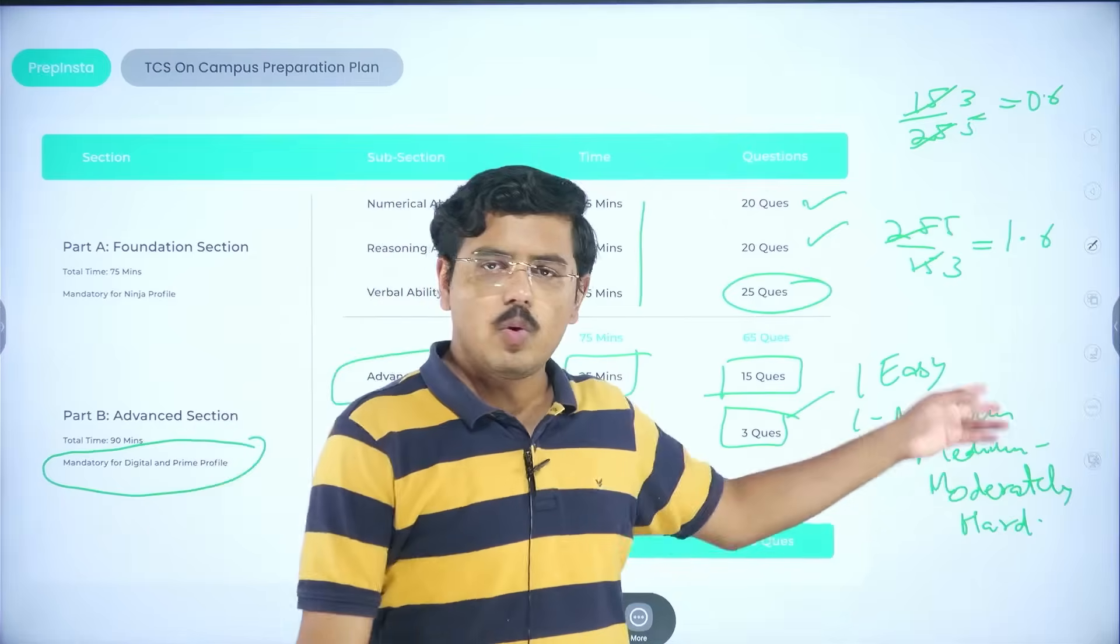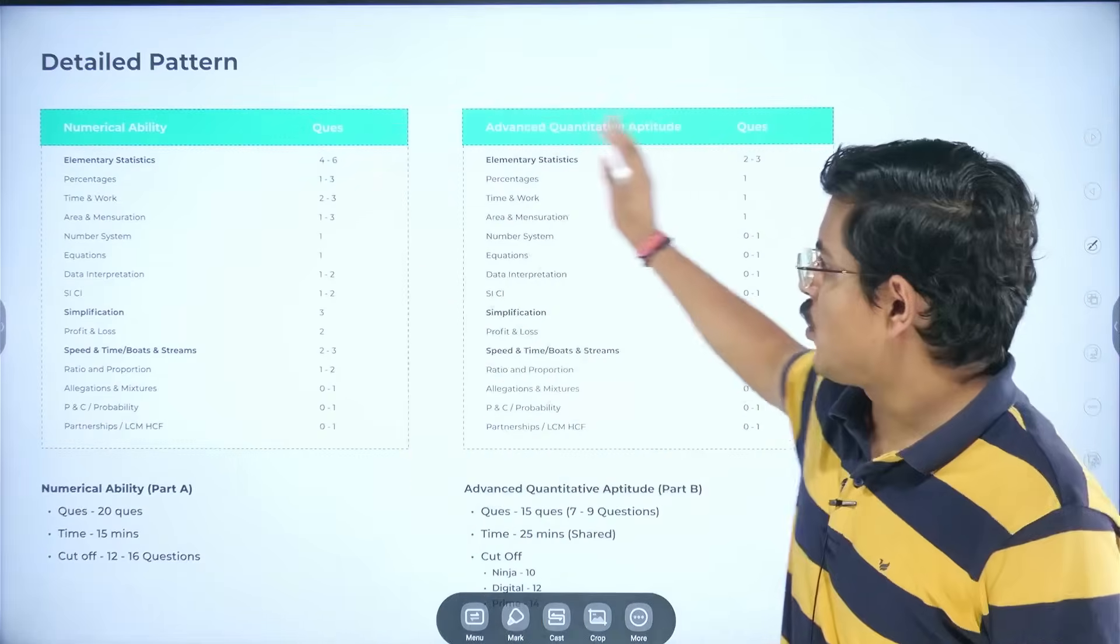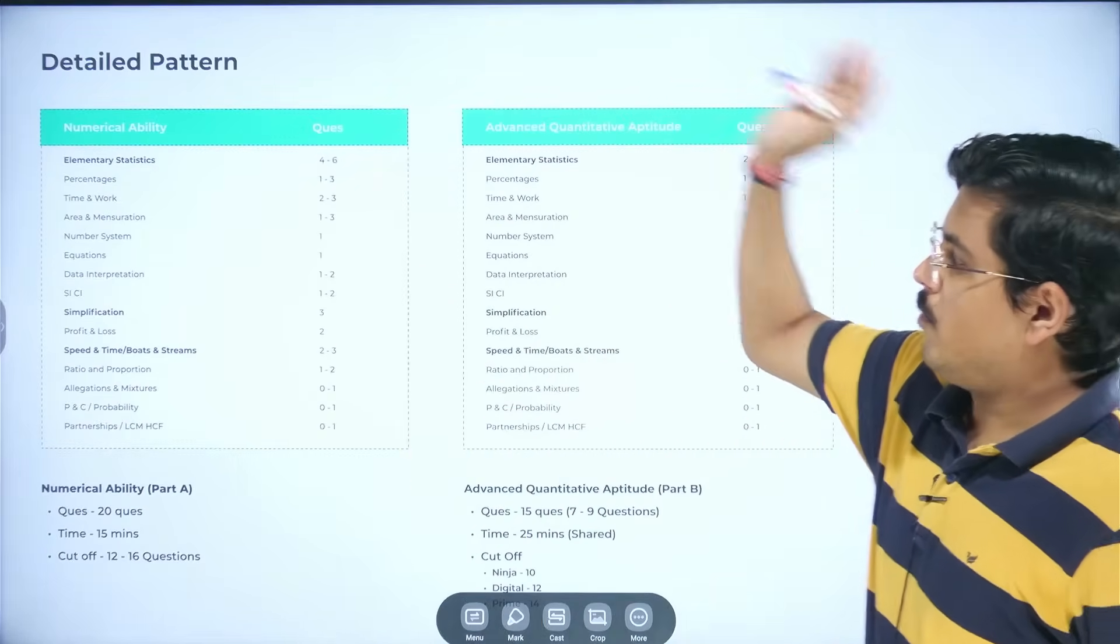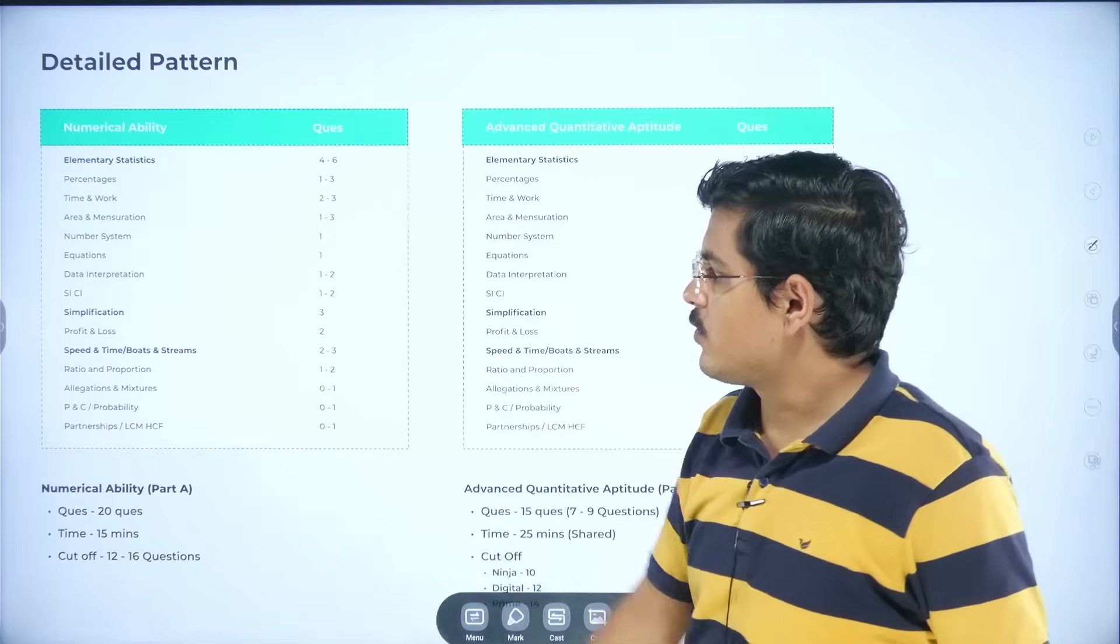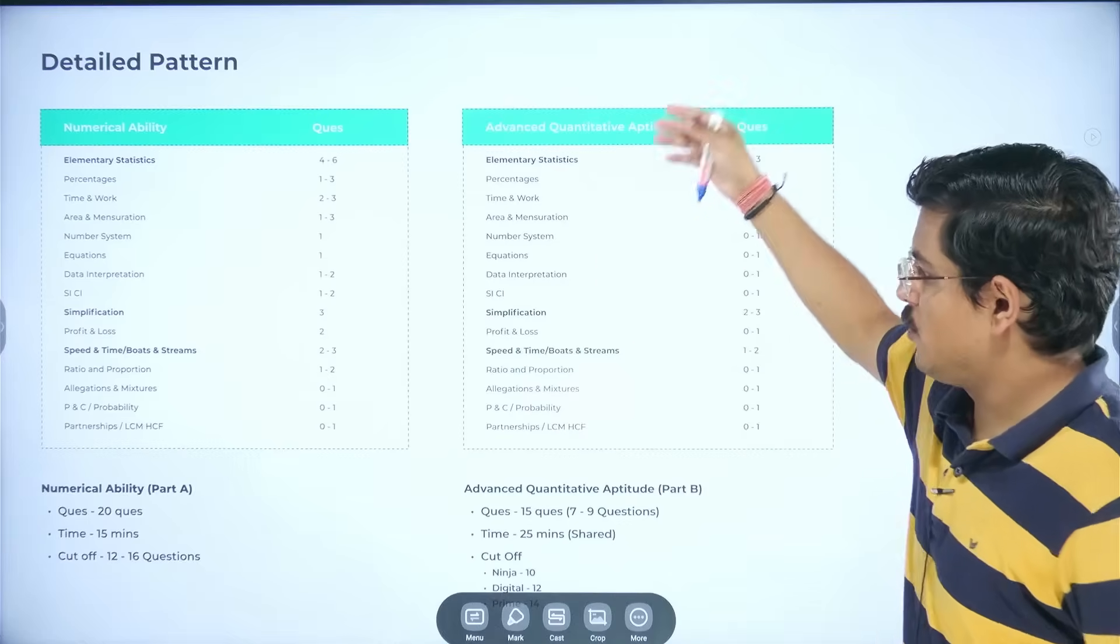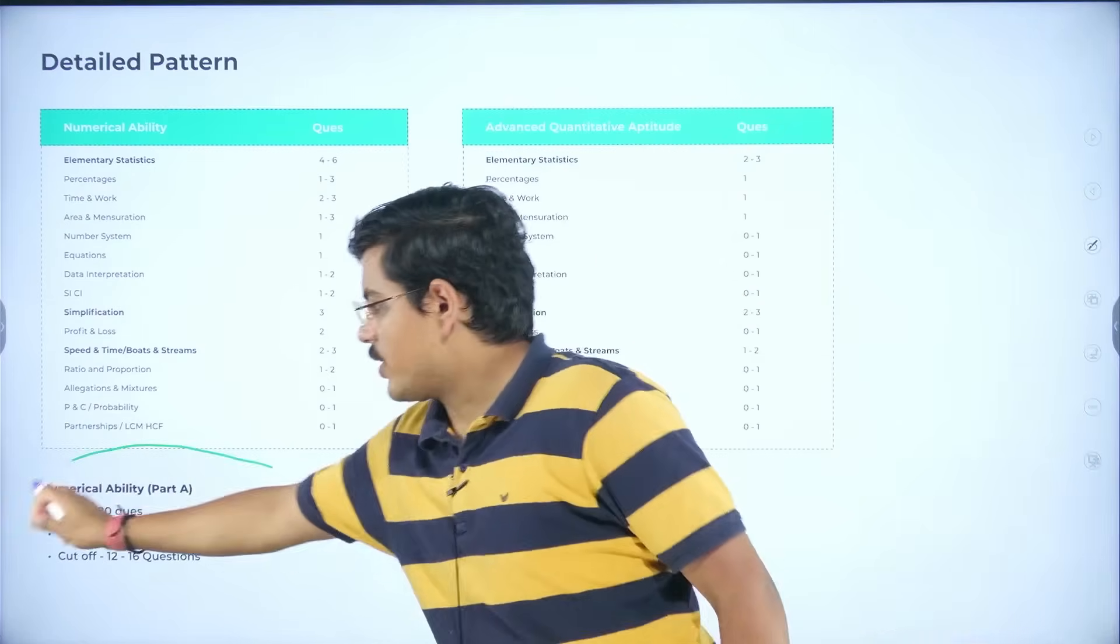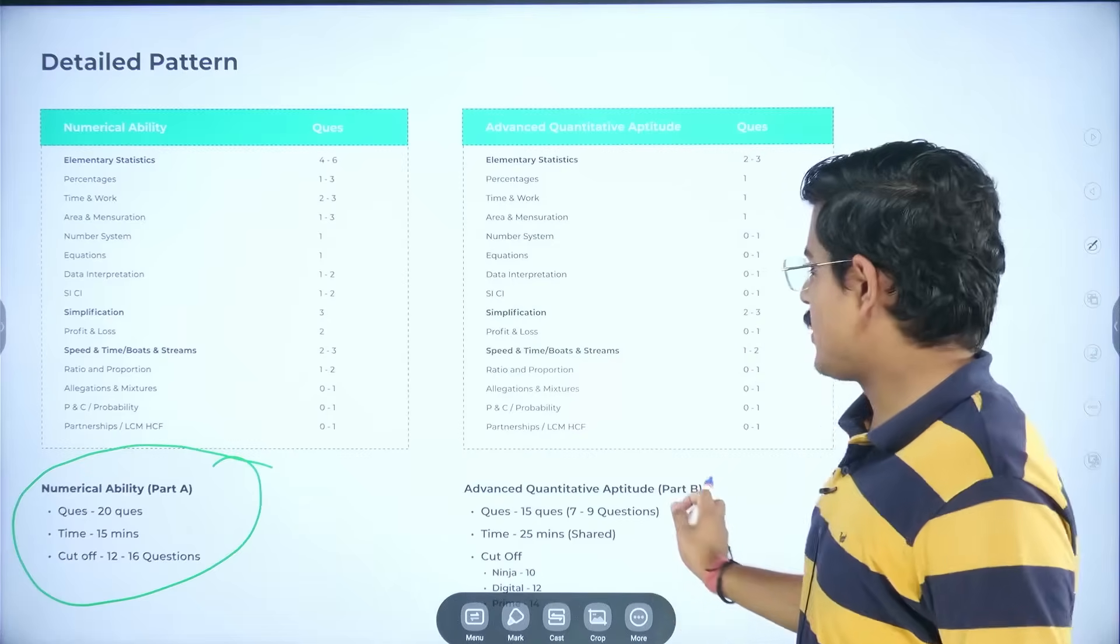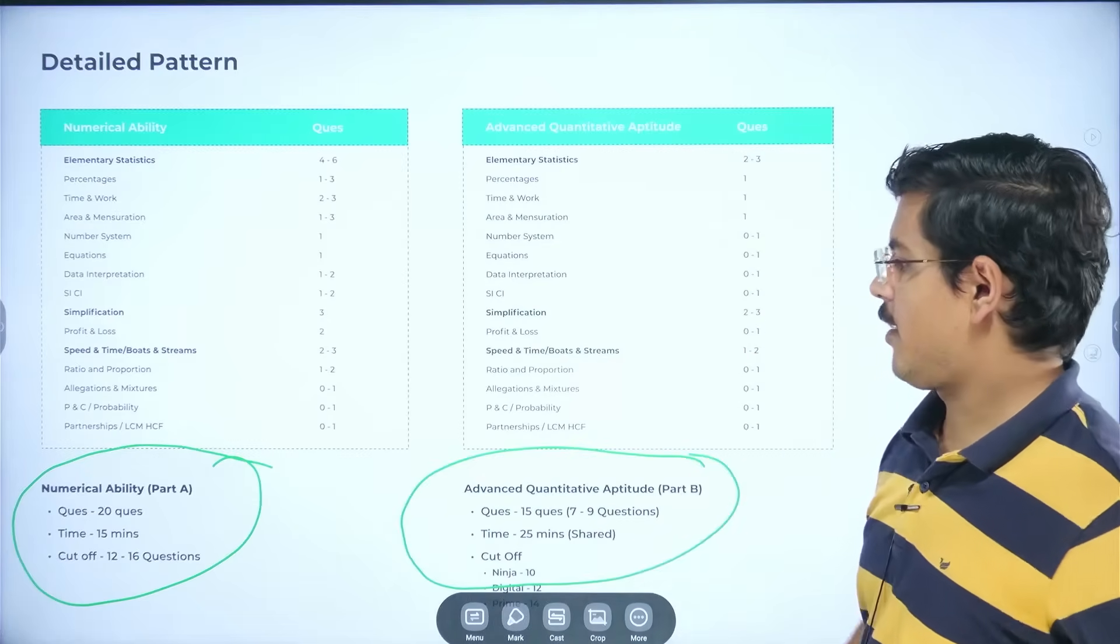How do you go ahead and prepare for this? Very simple. First of all, take a screenshot of all this. For numerical ability, you have complete sections, you have complete topics to cover. This is for foundation section. And this is for particular section of advanced quantitative aptitude.